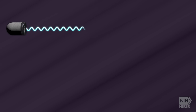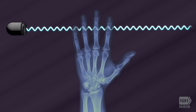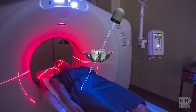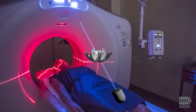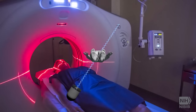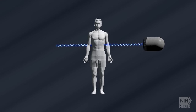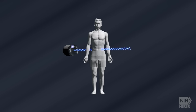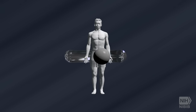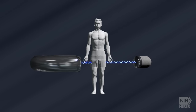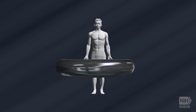A conventional x-ray uses a fixed tube that sends x-rays in only one direction, while a CT scanner uses a motorized x-ray source that shoots narrow beams of x-rays as it rotates around the patient. There are special digital x-ray detectors located directly opposite the x-ray source.